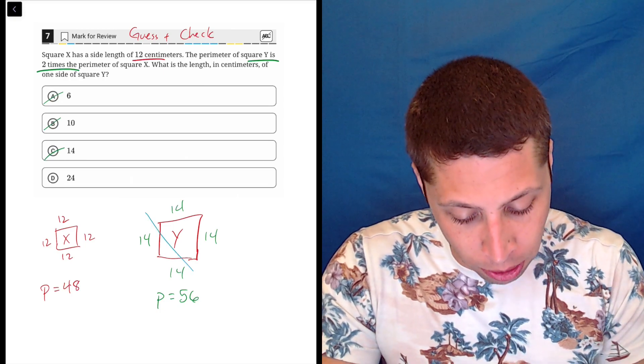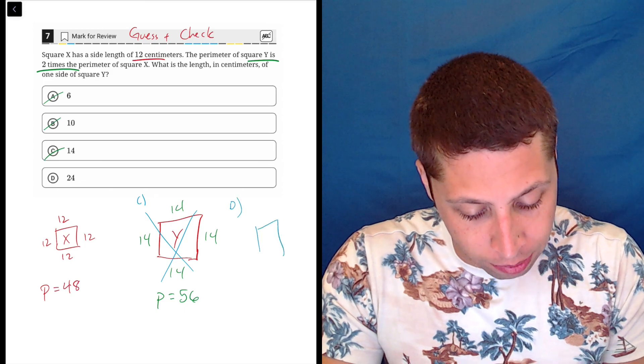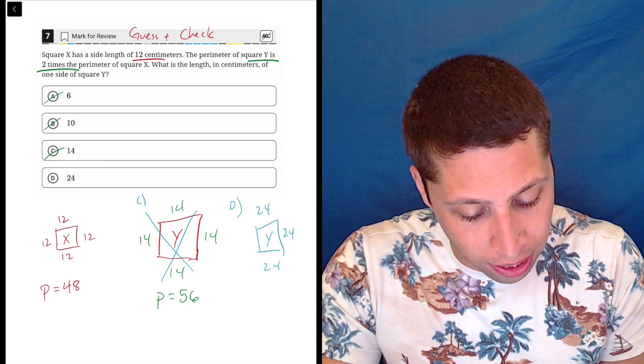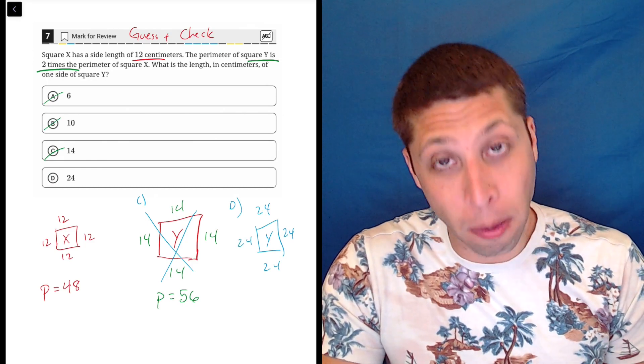But for the sake of just showing you this was wrong, this was choice C. Let's do D. And now I draw my square, square y, 24 is the side length. And it kind of makes sense that it's going to have a bigger perimeter or a doubled perimeter because it's a doubled side length.